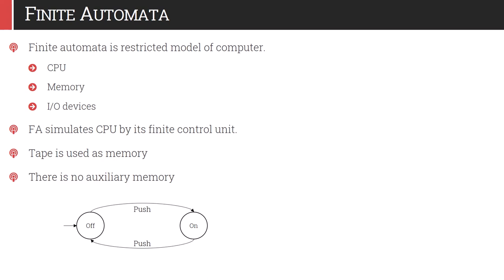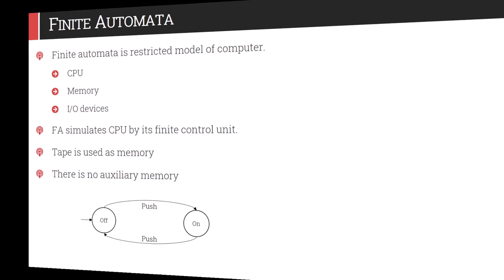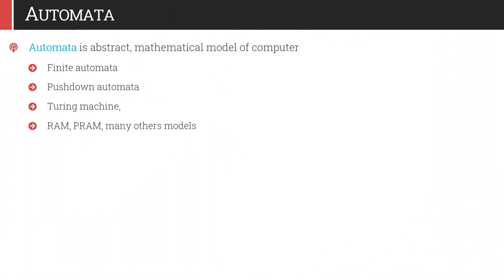We'll start with the very basic model of automata theory — finite automata — and gradually extend to more powerful automatas: deterministic pushdown automata, non-deterministic pushdown automata, and Turing machine, which is the most powerful machine we will study at the end of the tutorials. Automata is an abstract mathematical model of a computer, and the various types include finite automata, pushdown automata, Turing machines, RAM models, PRAM models, and many others, each with a different degree of power.